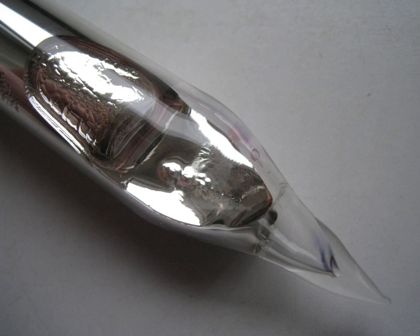Rubidium is the twenty-third most abundant element in the Earth's crust, roughly as abundant as zinc and rather more common than copper. It occurs naturally in the minerals leucite, pollucite, carnallite, and zinnwaldite, which contain as much as 1% rubidium oxide. Lepidolite contains between 0.3% and 3.5% rubidium and is the commercial source of the element.